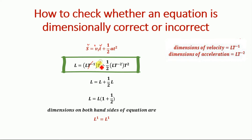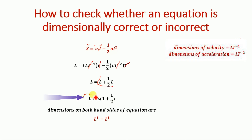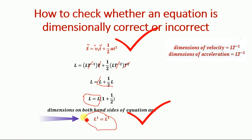Now, T to the power of minus 1 and T cancel in the first term, and T to the power of minus 2 and T squared cancel in the second term. The equation becomes: L equals L plus one-half times L. Taking L as a common factor, we have L equals L times (1 plus one-half). We can see that the dimensions on both sides of the equation are equal — both are L. Therefore, the second equation of motion is dimensionally correct.